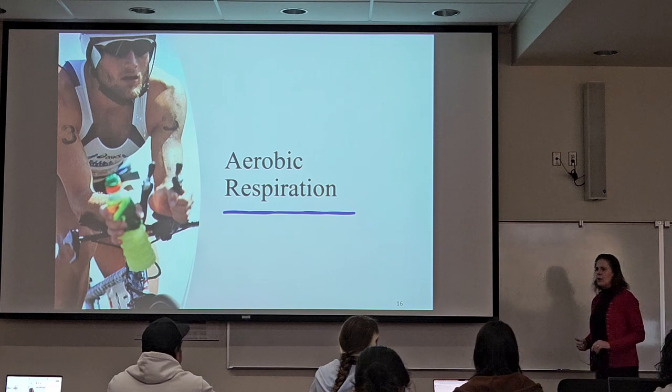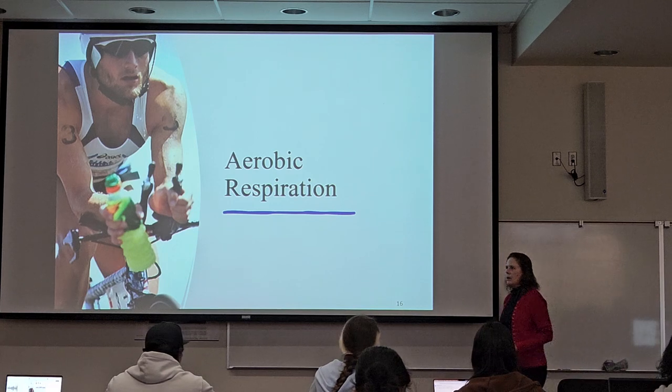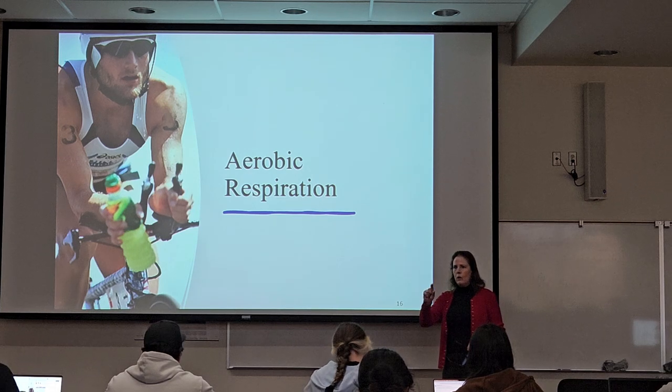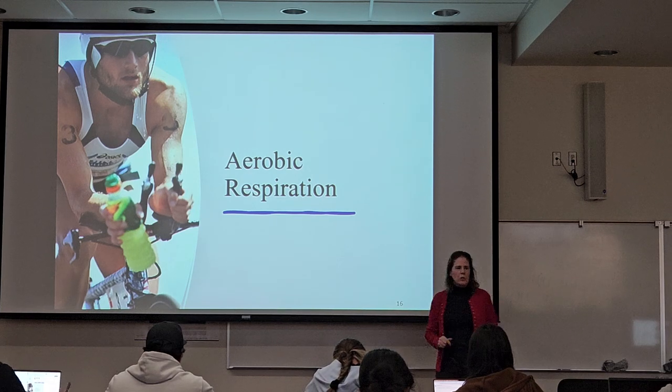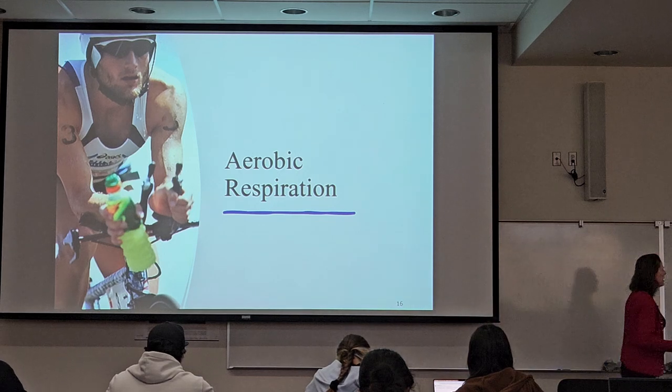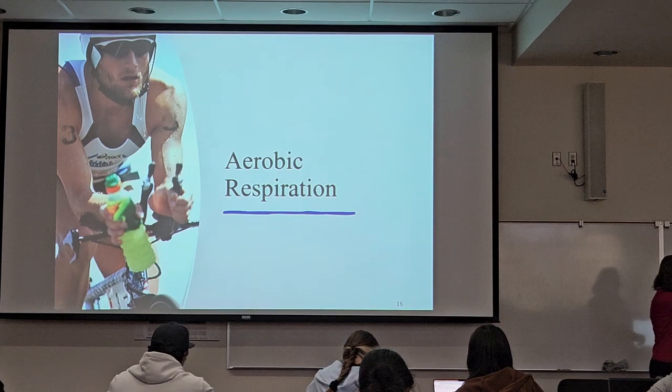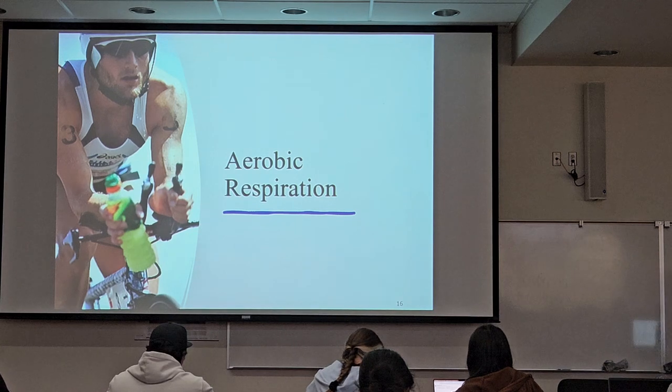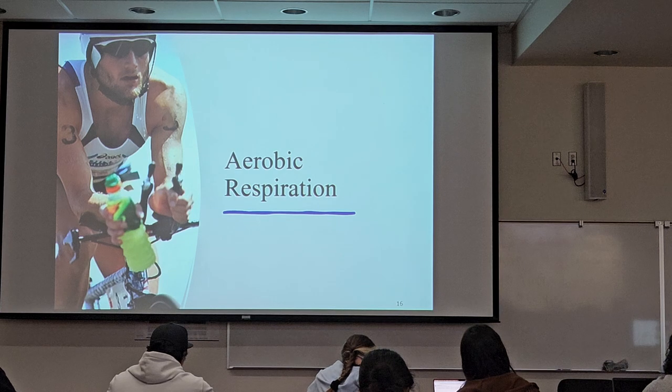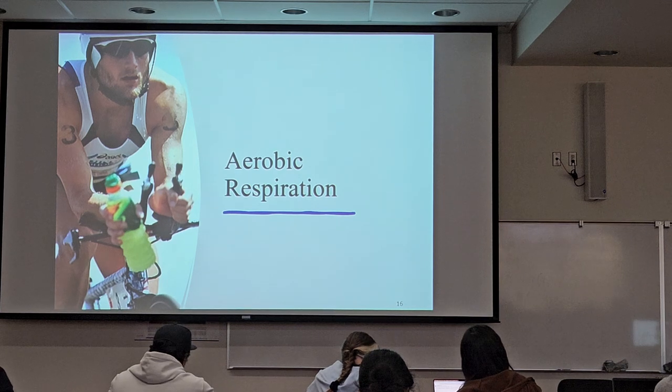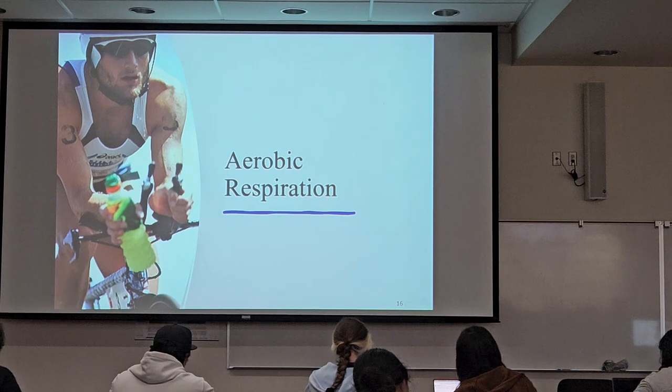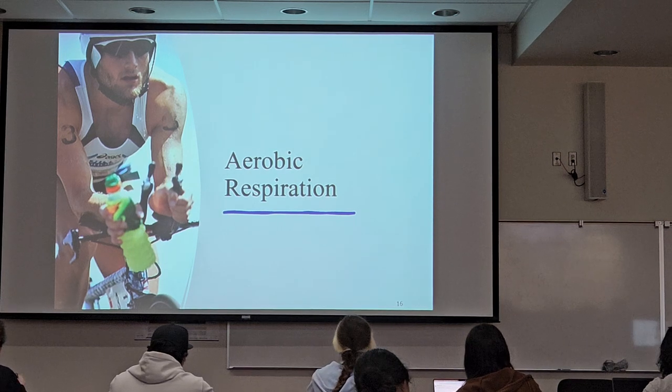Through aerobic respiration, organisms can break down the glucose completely and get all that energy that was originally in glucose to make ATP for the cell. Now a picture of this guy trying to run his bike race for a reason - what do his muscle cells, especially, need a lot of? ATP. So he's going to be busy making a lot of ATP in his mitochondria.